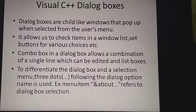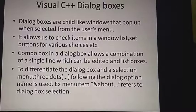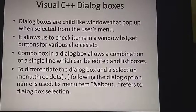To differentiate a dialog box from a selection menu, the dialog box will use three dots followed by the dialog box option name. For example, using ampersand 'About...' with three dots for the menu item means that the menu item is a dialog box selection.